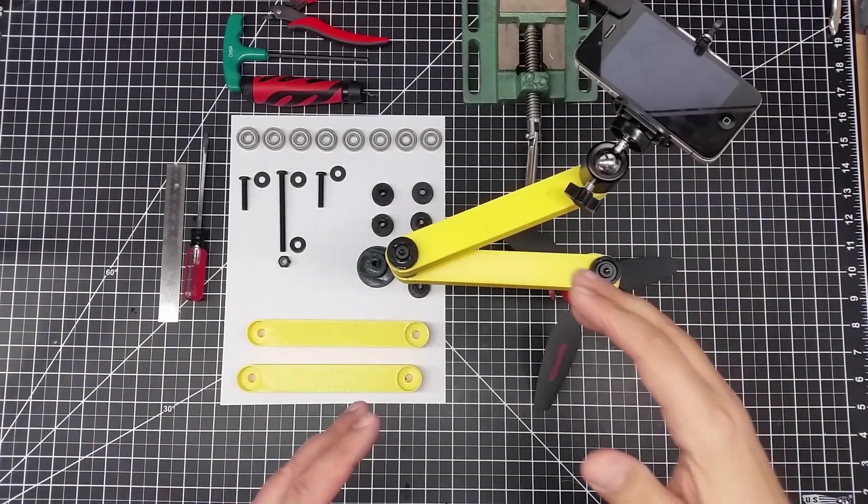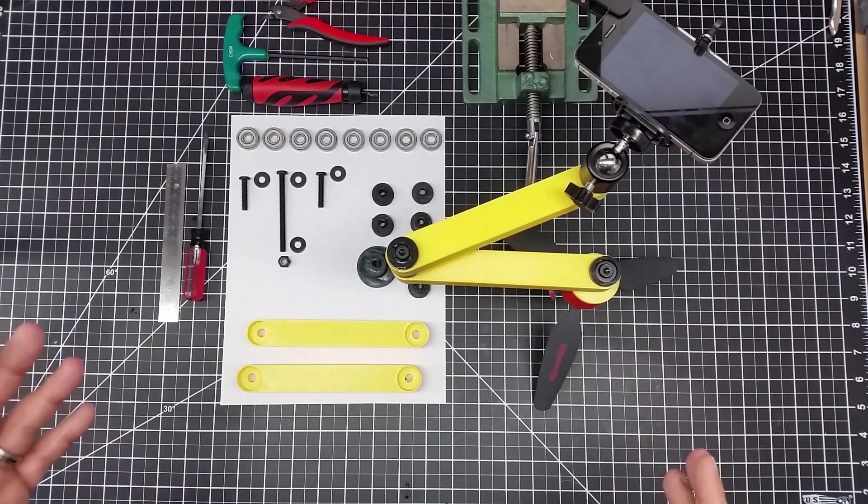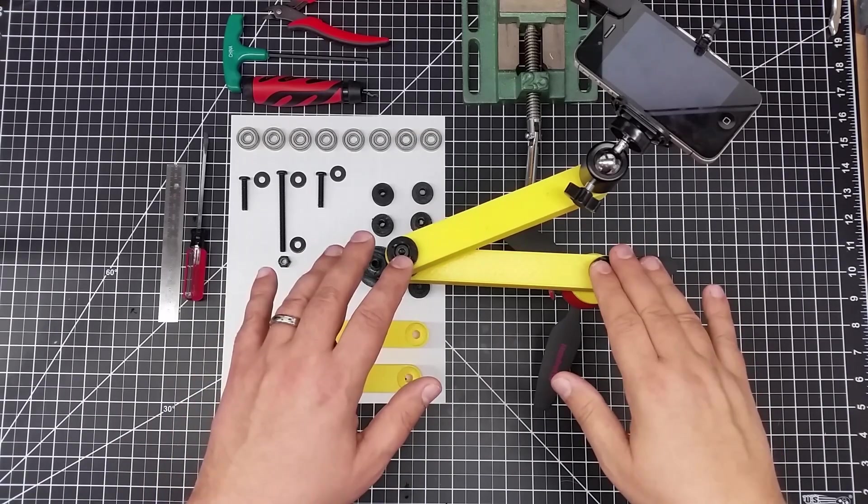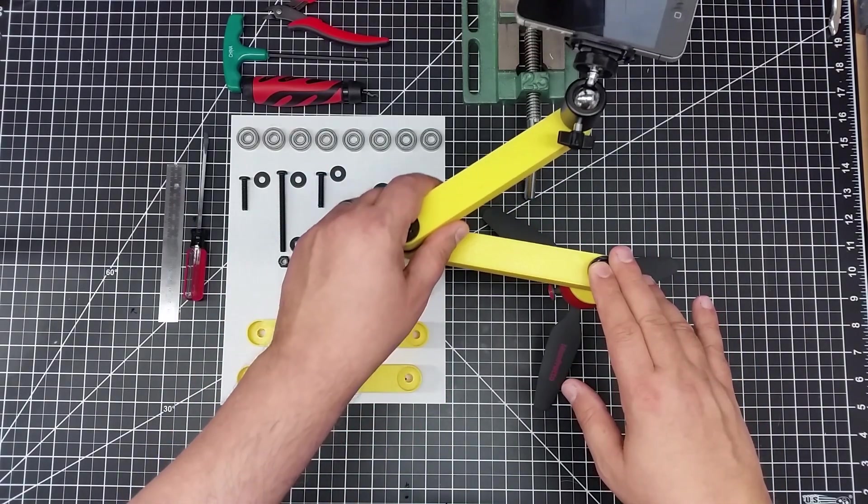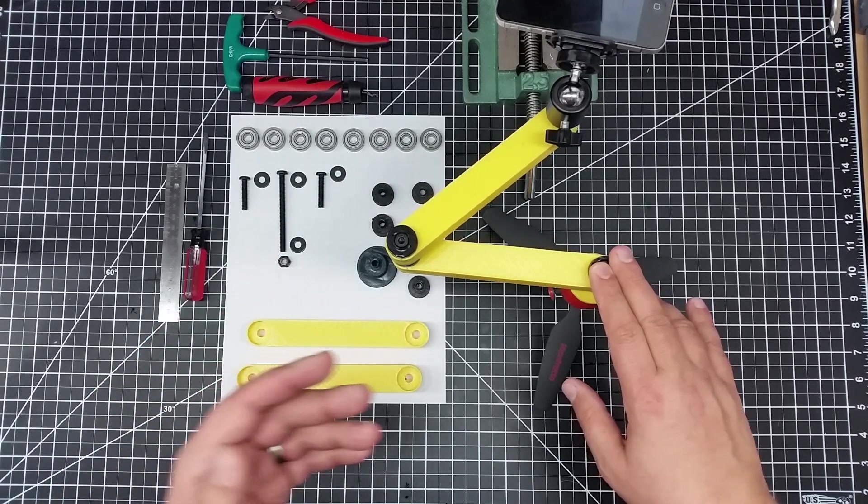So before we get into the actual build, one of the things I want to talk about is how does this actually work? So what I did is I modeled this actually off a pantograph. And for those of you old school enough to remember, a pantograph would have another two arms, a little bit smaller size built in here.